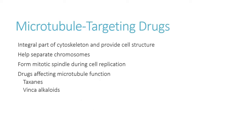Transitioning from drugs affecting nucleotide production to microtubule-targeting drugs. Microtubules are critical for mitosis — they pull chromosomes apart. If I inhibit either the production or breakdown of microtubules, mitosis cannot complete. These drugs are specifically M-phase agents — cell cycle specific for the mitosis phase. Two main drug classes affect microtubules: taxanes and vinca alkaloids.